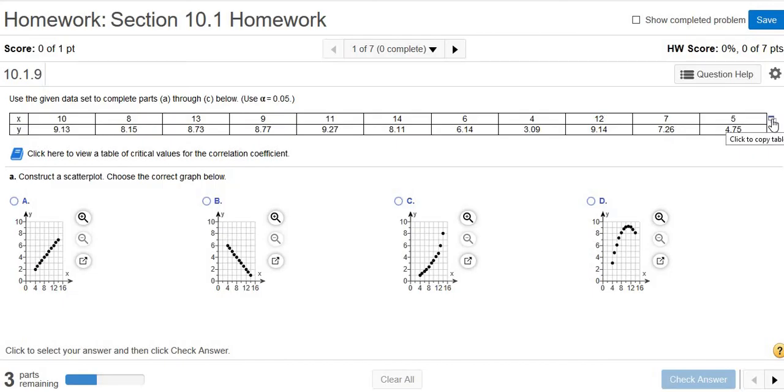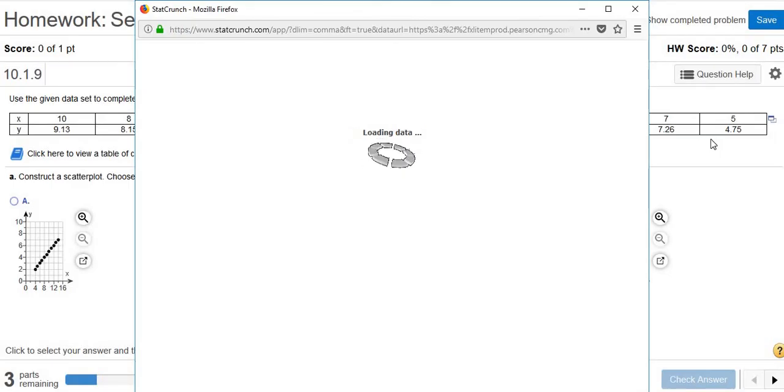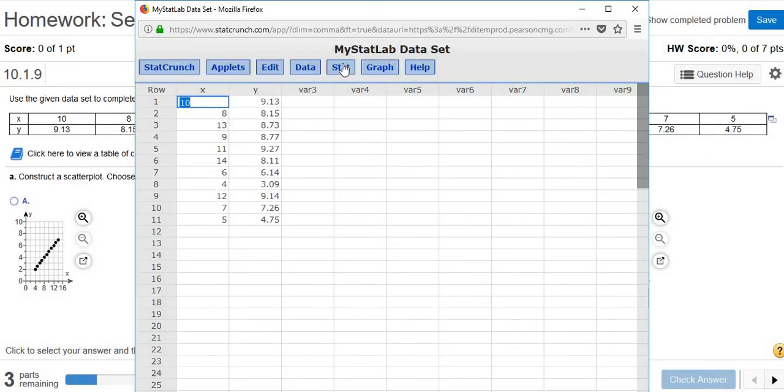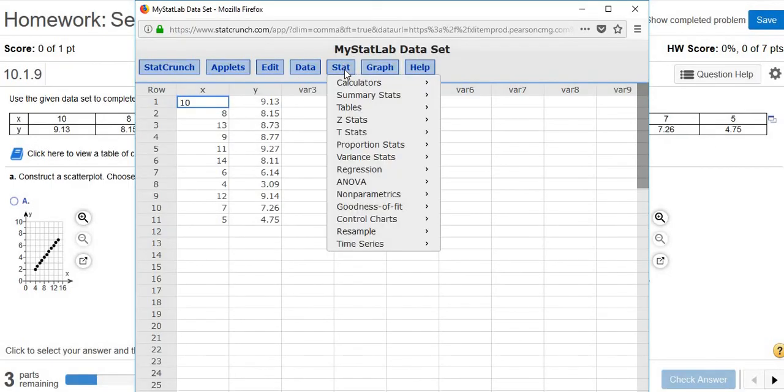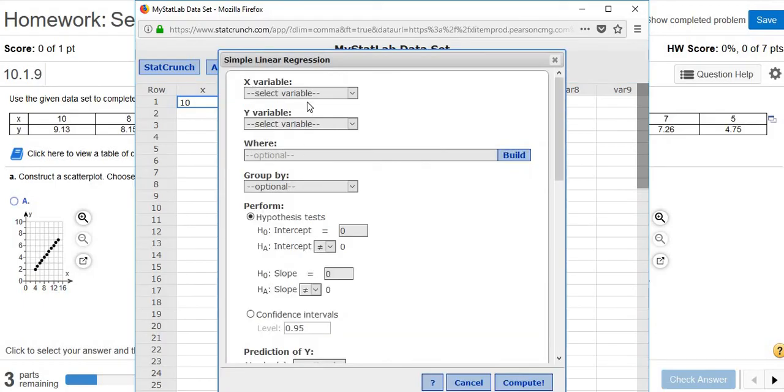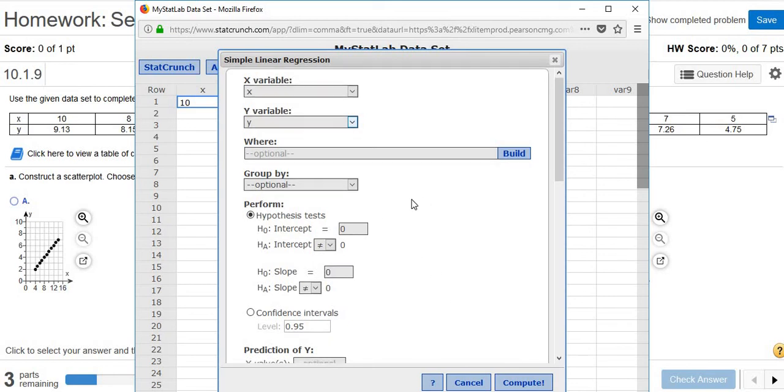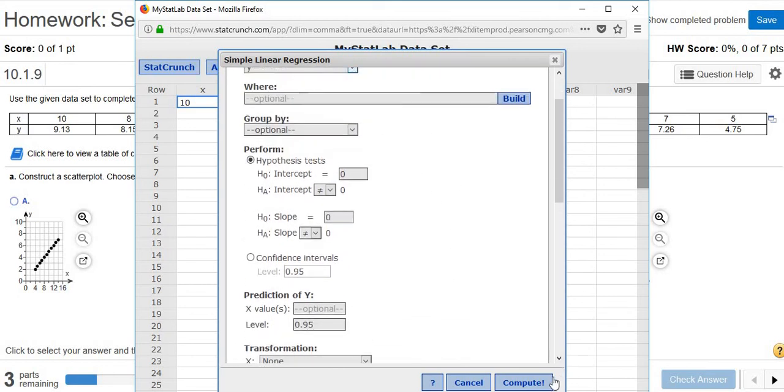So we'll click on this little box here and select 'Open in StatCrunch.' Then we always go to Stat, Regression, Simple Linear. You left-click and just always pick x and pick y. Usually the first thing and the second thing. All of this stuff we just leave it alone and click Compute.